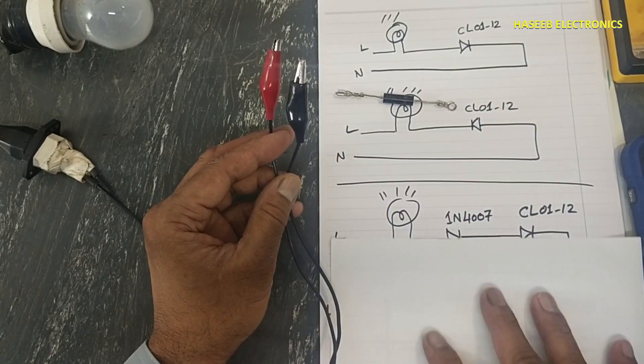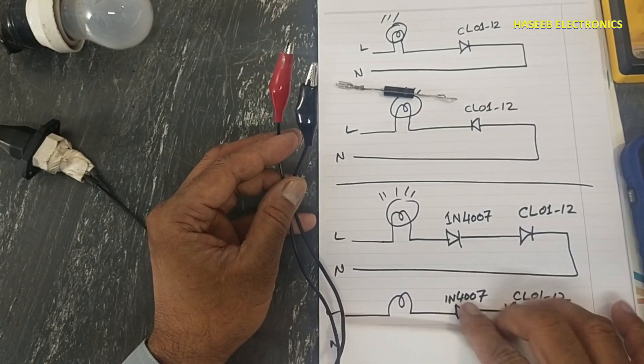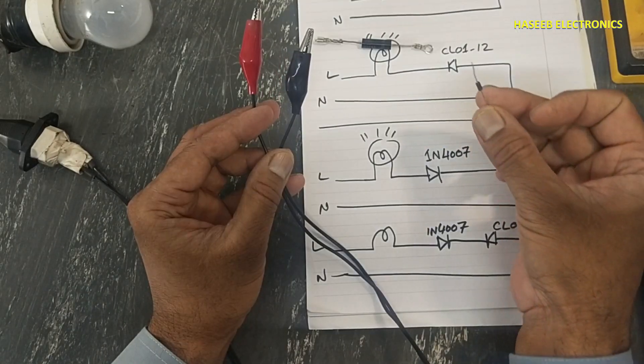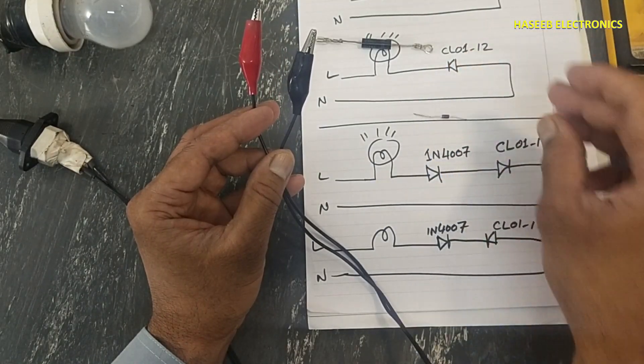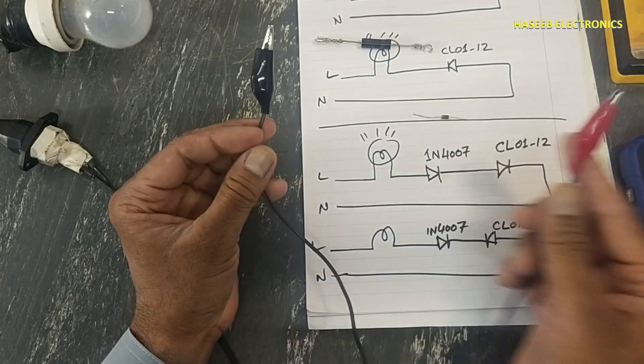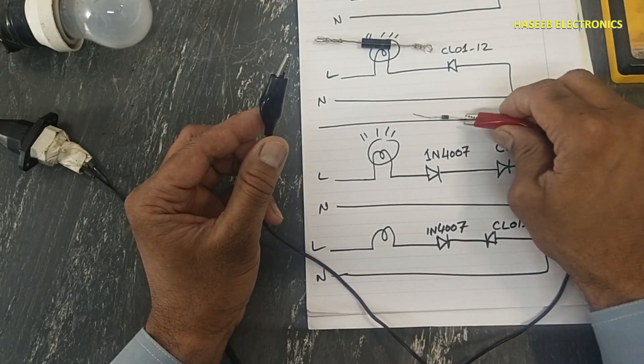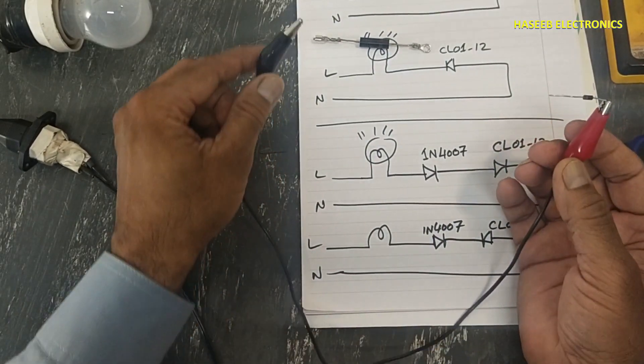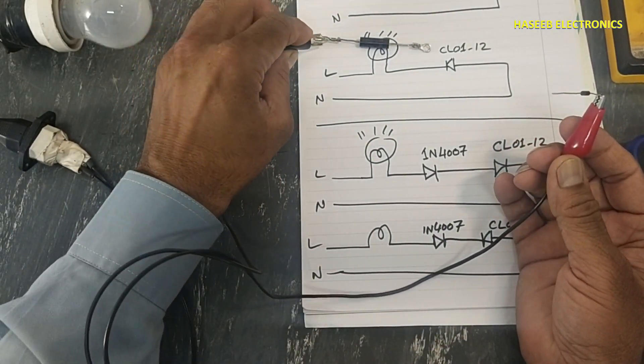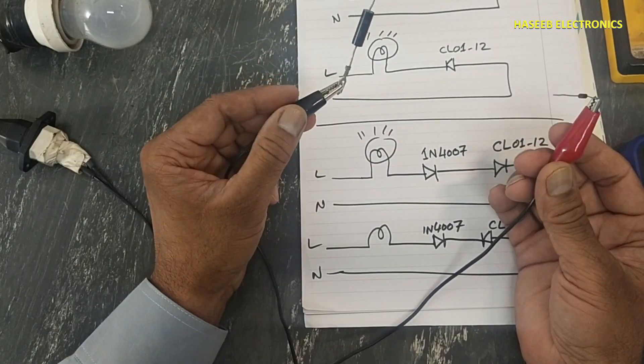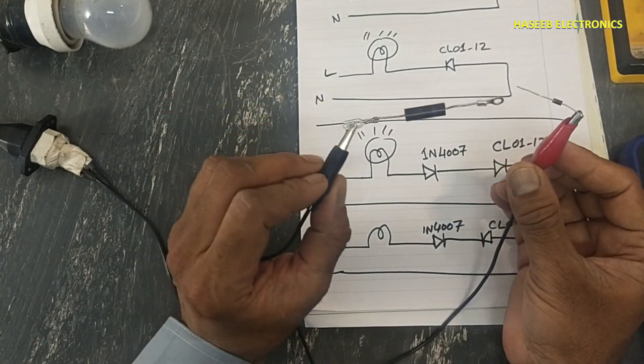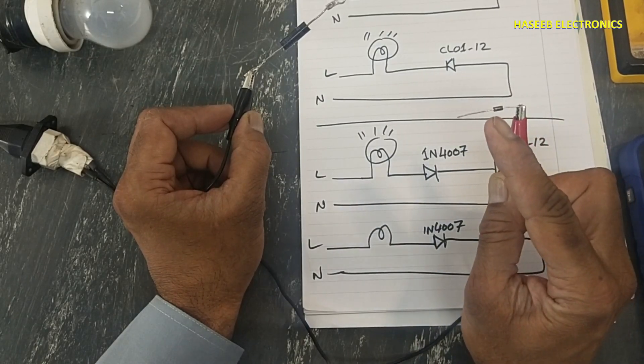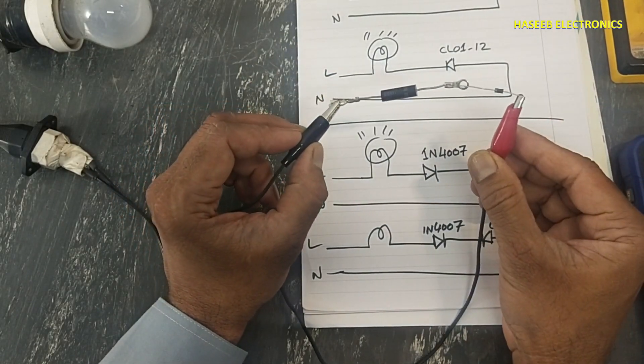For that purpose, we need one 4007 diode. In this way, 4007 diode, we will connect any one lead to anode. Here connect one lead. In this side now we have open end cathode here. This open cathode is here, connect here.